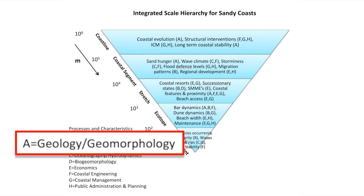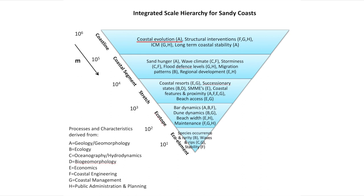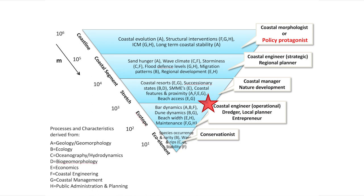A geologist characteristically considers longer time scales and more extensive spatial scales than most other disciplines. They see factors like coastal evolution, sand hunger, and bar dynamics, but they don't necessarily see waves and rips. I found that it is the combination of people's disciplinary training and their tasks in coastal management that determine the scale at which they prefer to focus. The tasks in coastal management and policy implementation of the people that I interviewed are shown in the boxes on the right-hand side.